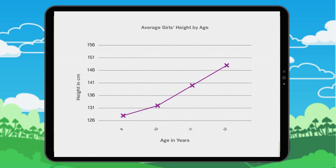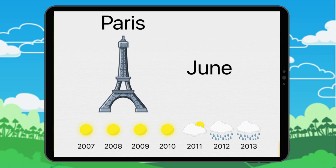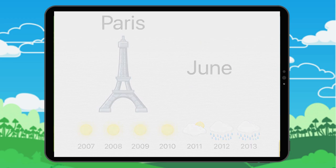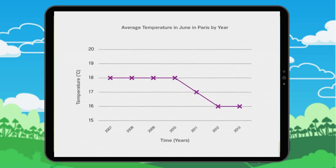Let's look at this example. We'll make a graph showing the average temperature in June in Paris by year. Here, the temperature is a function of time.